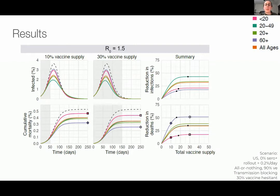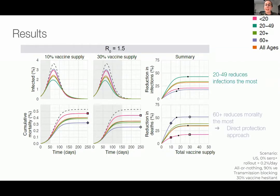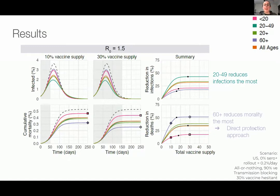On the top, you can see the percent reduction in infections for each of the prioritization strategies compared to when no vaccine is available. At all levels of vaccine supply in this case, we see that prioritizing those aged 20 to 49 reduces infections the most. If instead the goal of vaccination is to minimize mortality, we see on the bottom plot that prioritizing adults 60 plus is the best way to go about that for this specific scenario. That's really the direct protection approach I was talking about earlier.